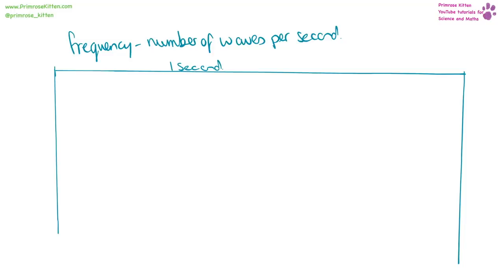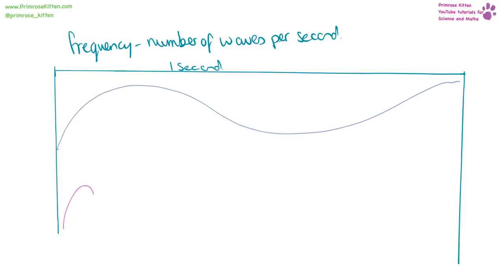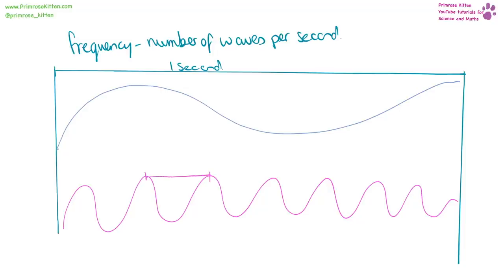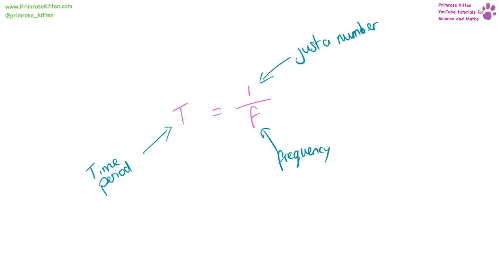Frequency is the number of waves per second. Low frequency means few peaks in one second with a long wavelength; high frequency means many peaks with a short wavelength. Time period equals one over frequency. Time is in seconds and frequency is in hertz — capital H, lowercase z. Do not write both letters the same case, as that would be wrong.